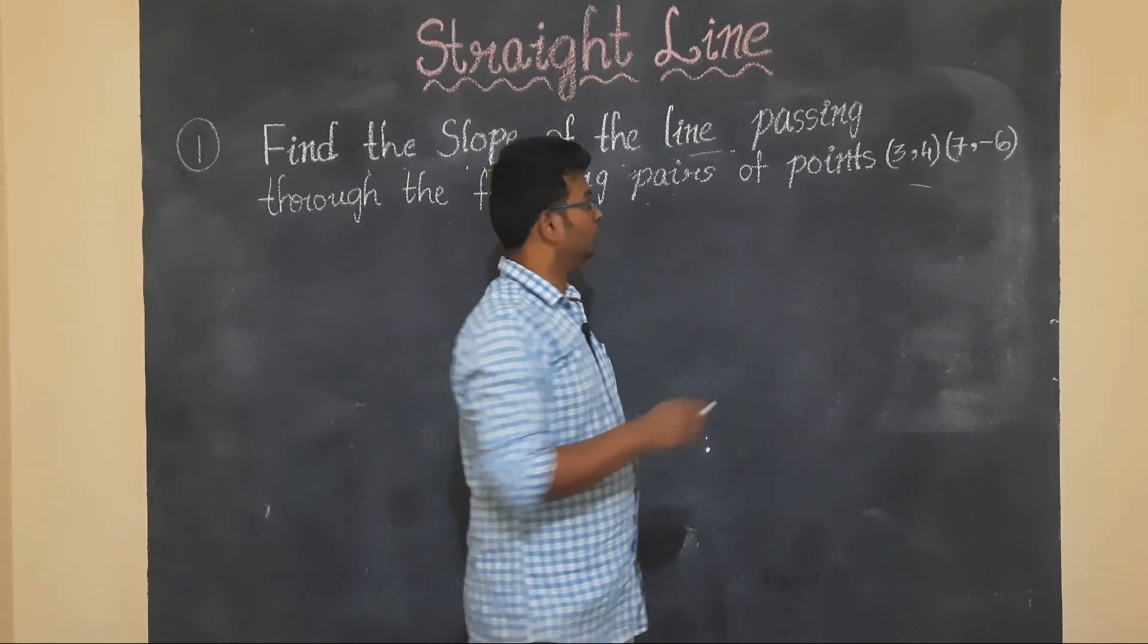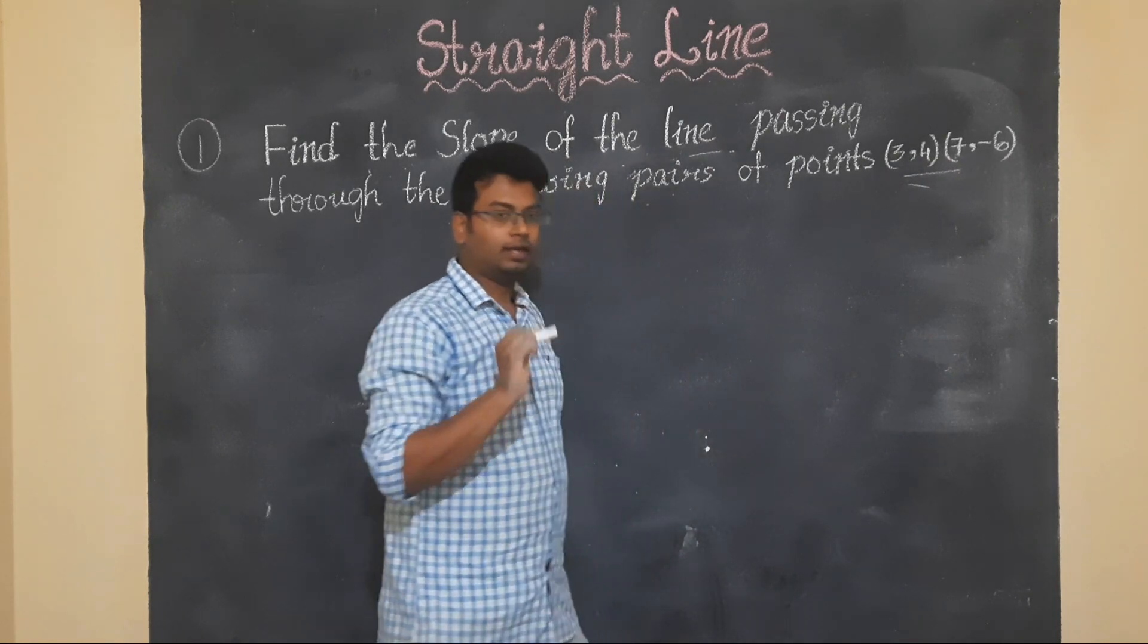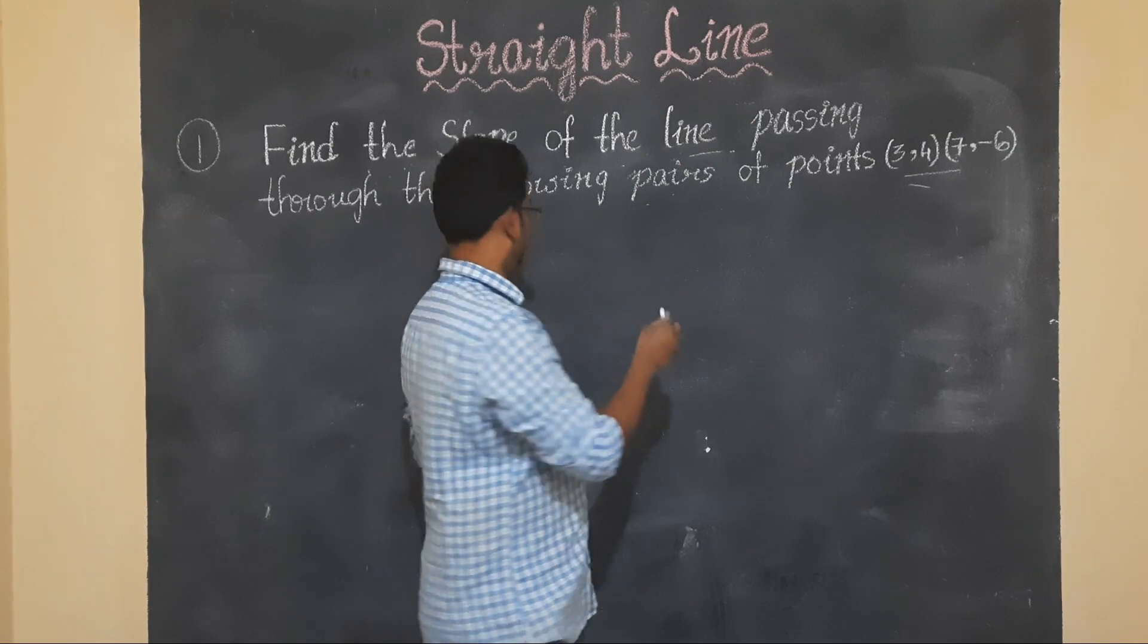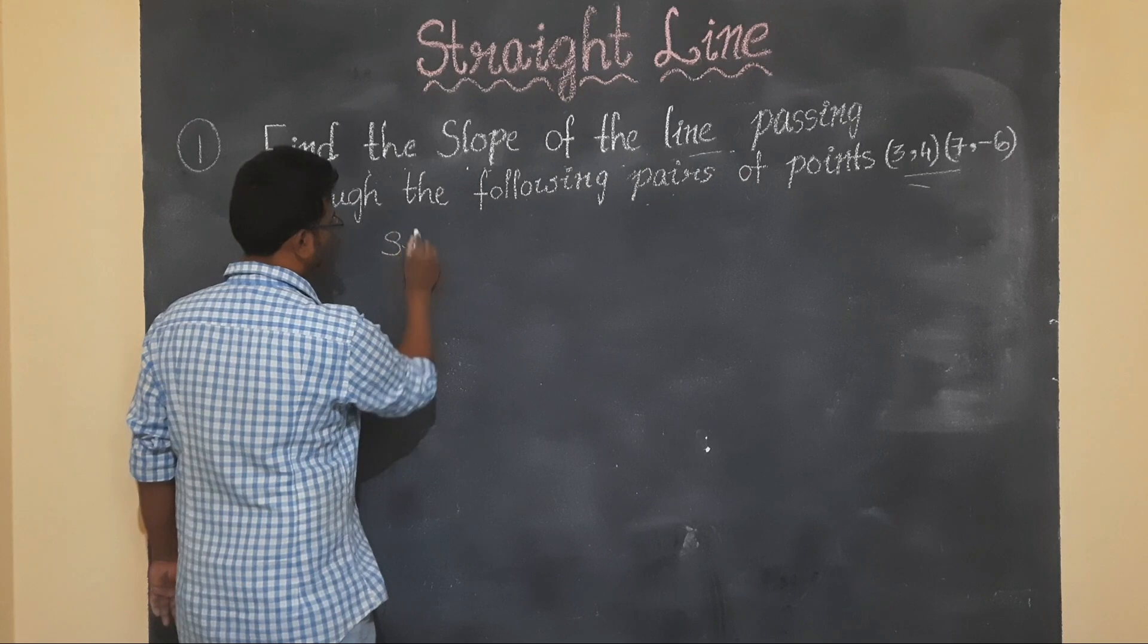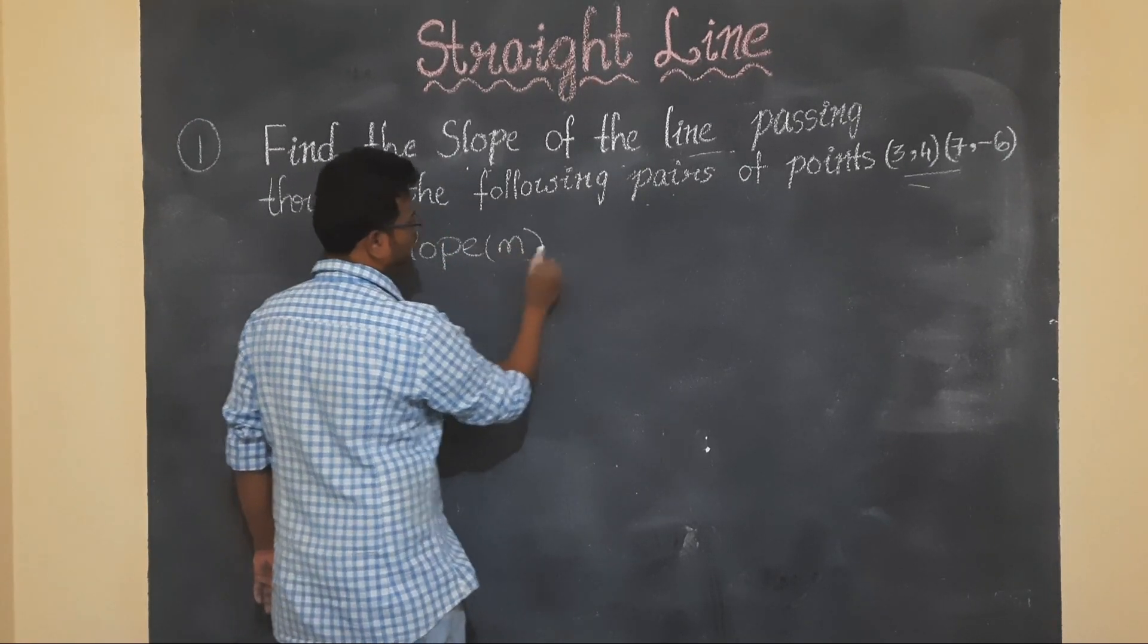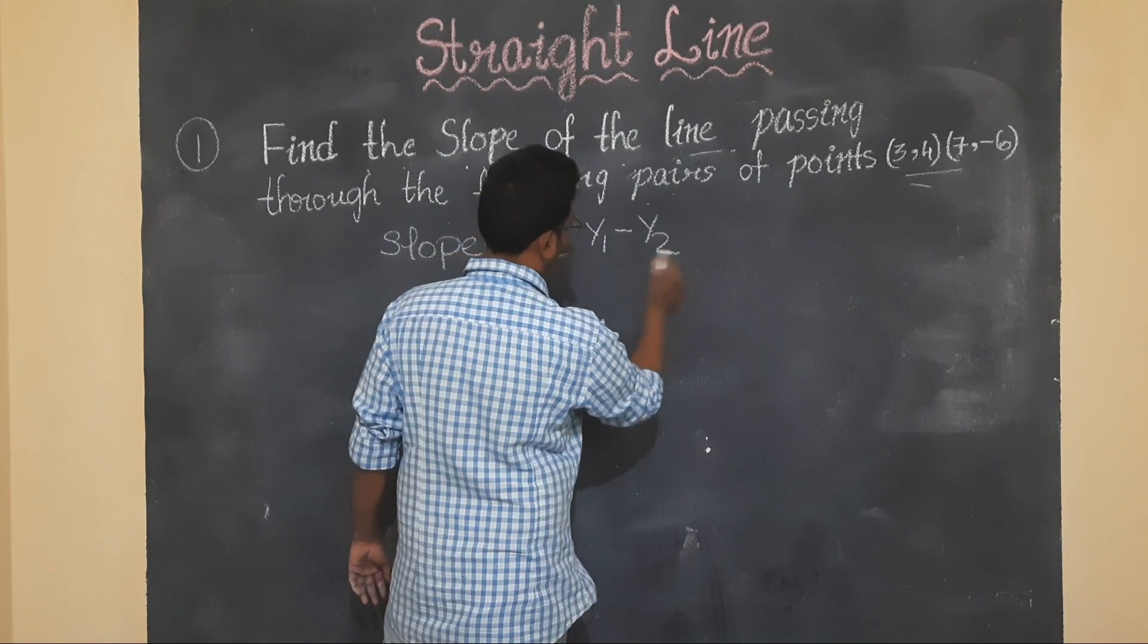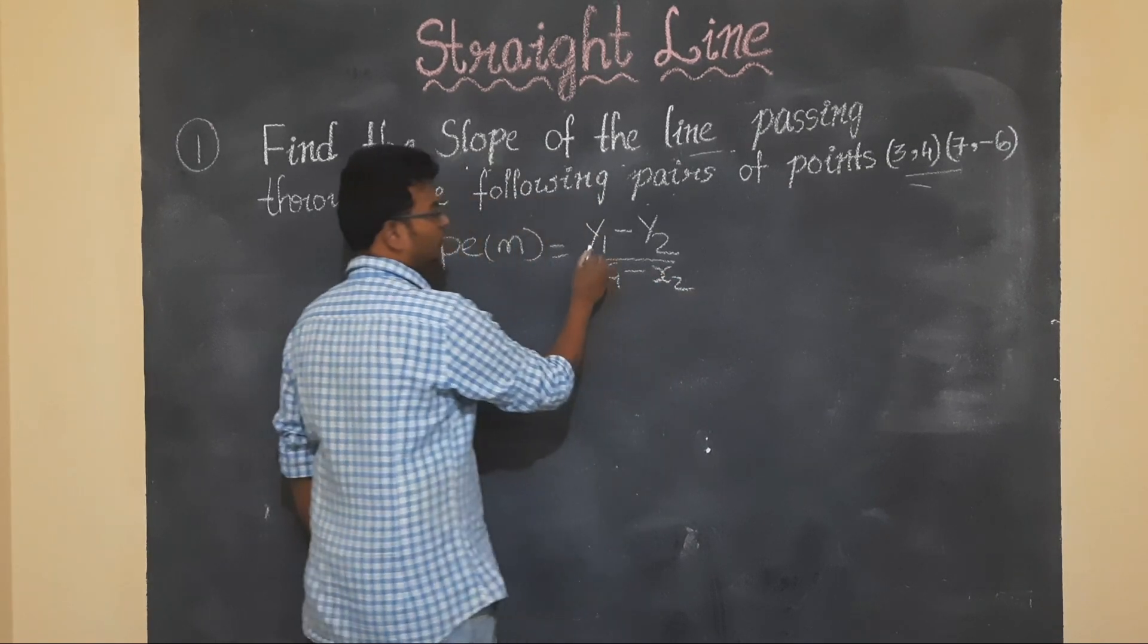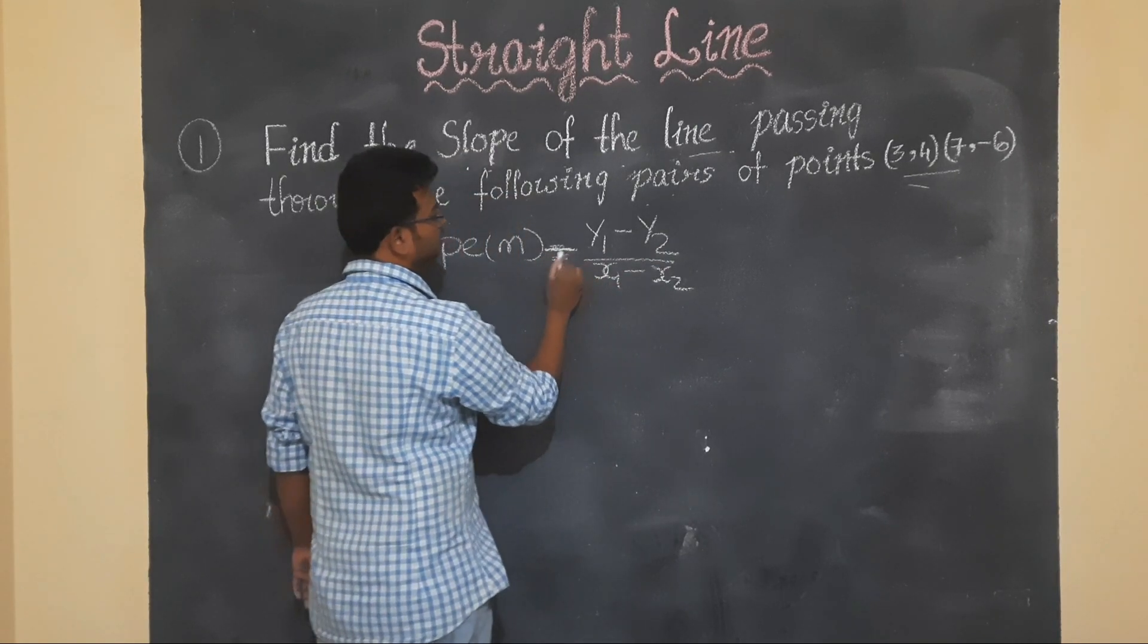Clear students? So these two points pass through the line, and we need to find the slope. Slope m is equal to y1 minus y2 by x1 minus x2.